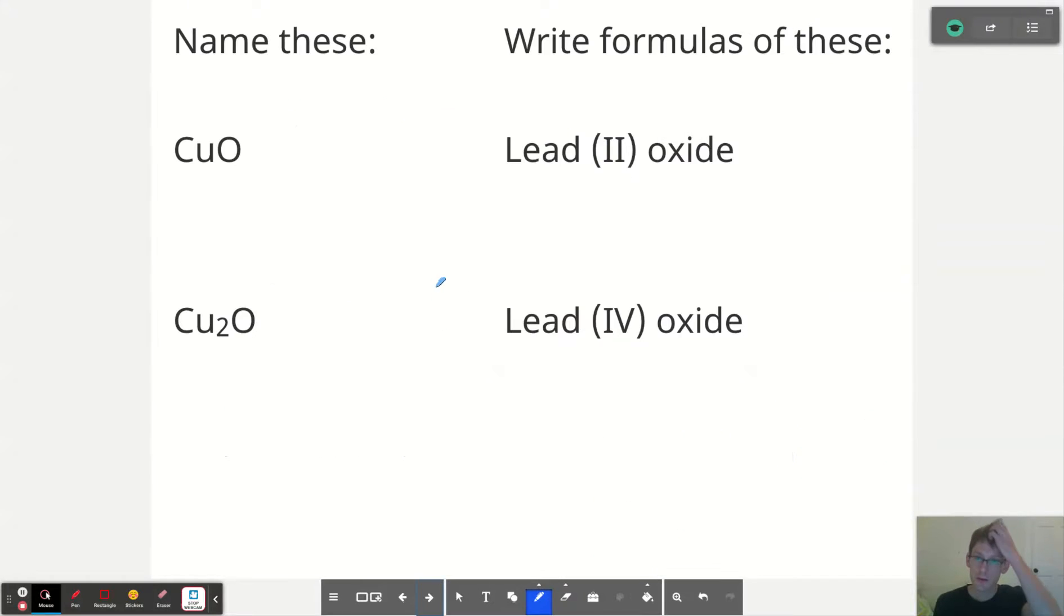So let's say we have CuO. If we're trying to name it, what we can do is realize that copper has multiple possible charges. So I need to use the stock system. So I say copper with the roman numeral oxide. And what I can do is realize that my oxygen is always negative two. And since there's only one of them and only one copper, my copper has to be plus two. So I say copper two oxide.